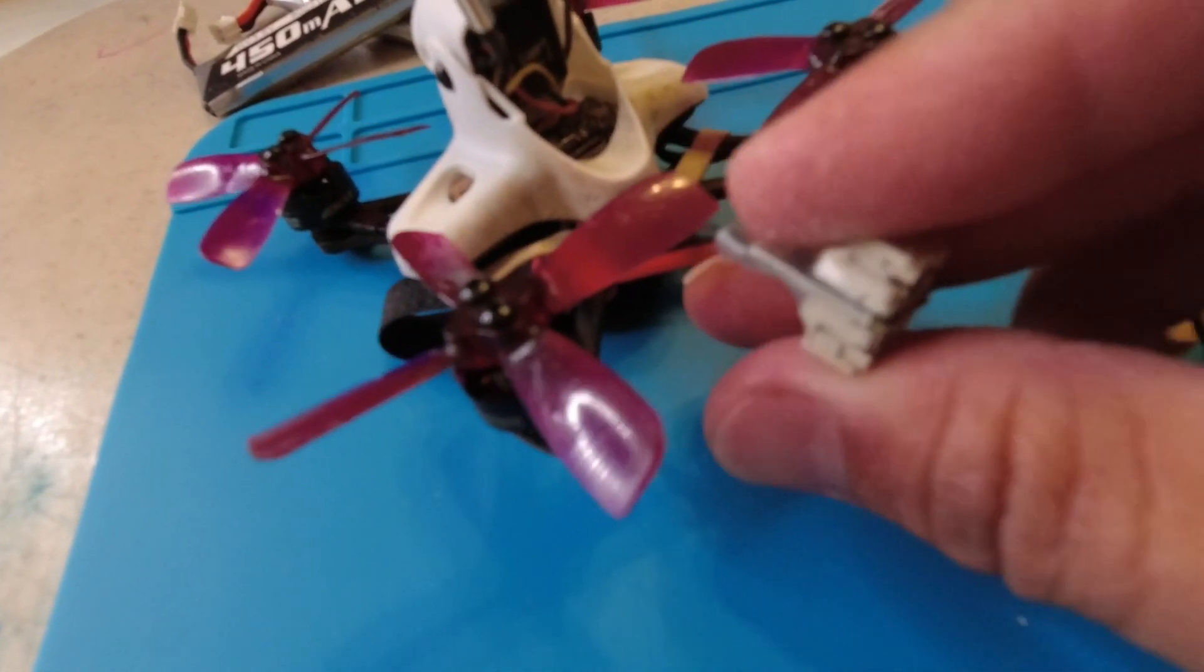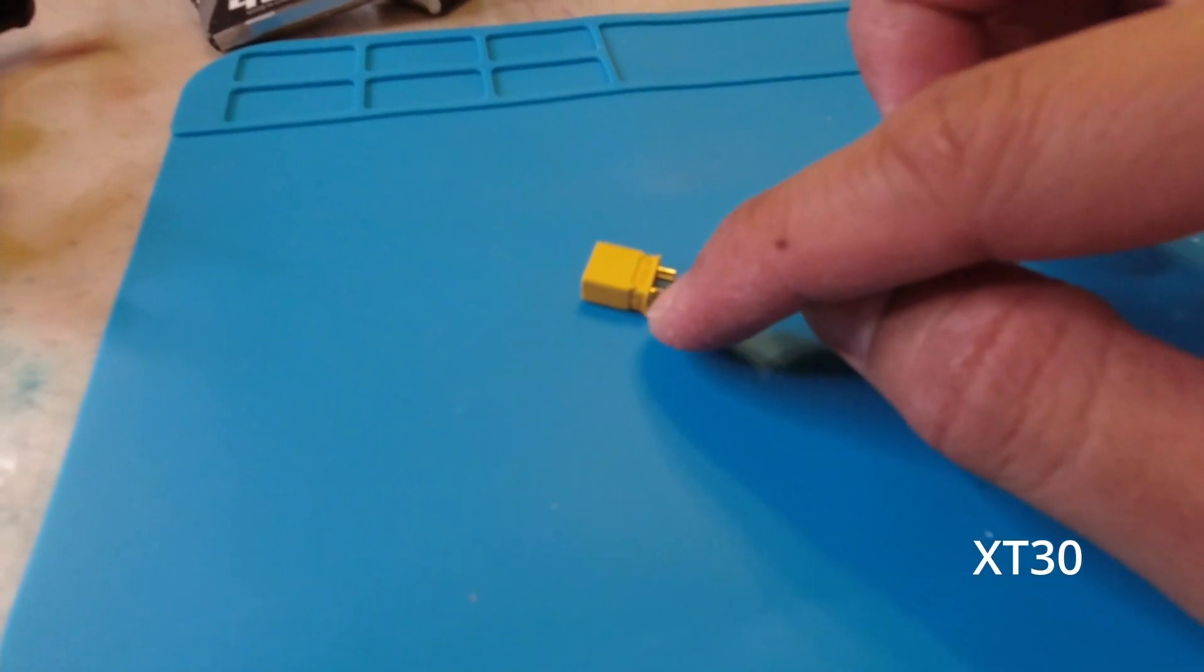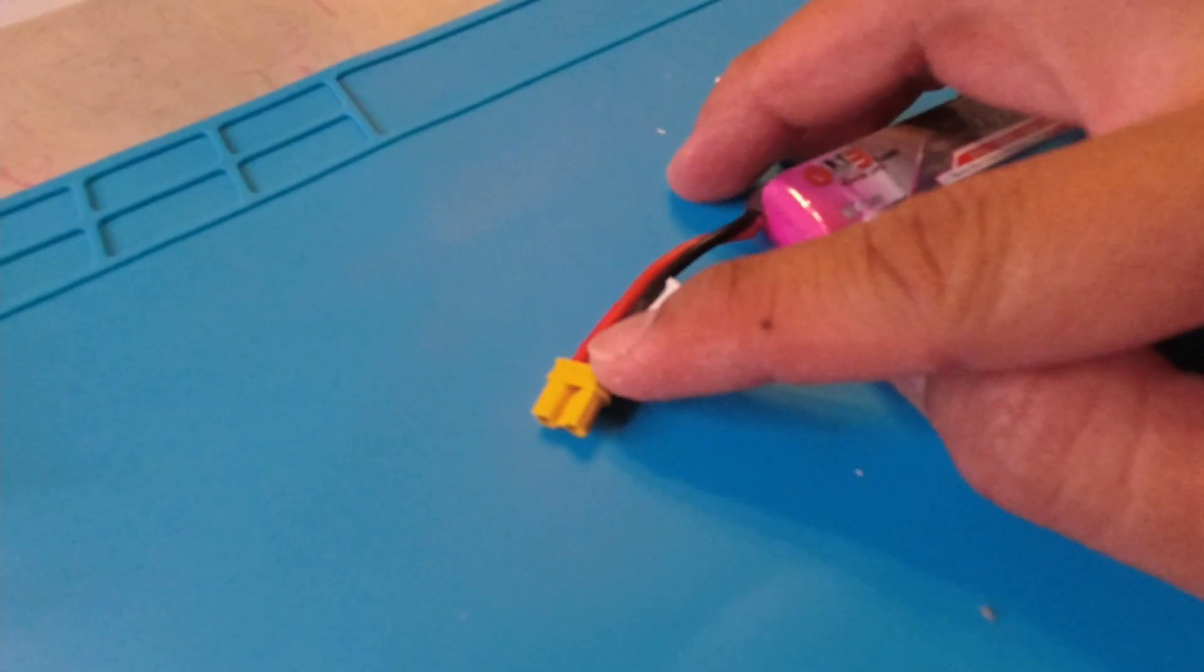We're going to change the JST PH 2.0 connectors, yeah I know that's a mouthful, to an actual XT30. I'm mainly doing this because I hear for the same size battery, this is a GNB 450, but it's a 2S and this is the XT30 connector, supposedly you get more power, more consistent flight time I should say. And with these you get about three to four minutes, but supposedly with this you're going to get four to five.